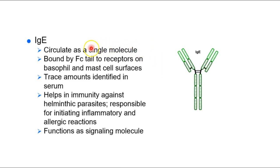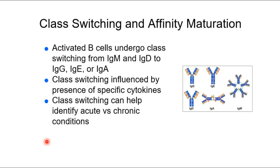Finally, IgE is also a single molecule found in serum. IgE plays a role in very specific immunologic pathways: parasites and allergic reactions. It's closely associated with eosinophils, which handle helminthic parasites, and basophils, which handle allergens. IgE acts as a signaling molecule in these cases. Interestingly, antibodies can class switch, meaning the molecules can change from one class to another.